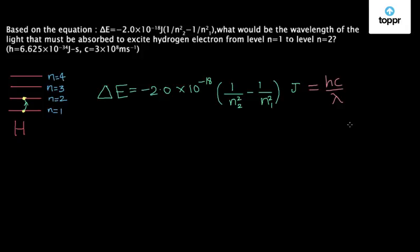We just put all the variables in the equation. Our n2 is 2 and n1 is 1. H and C are given to us in the question, and lambda is what we have to find.